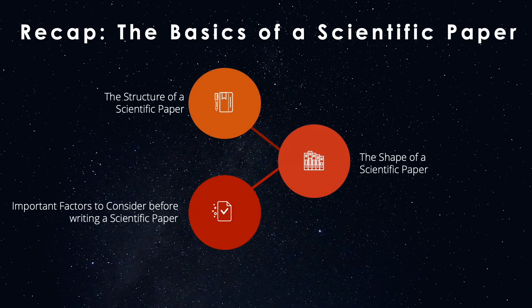To recap, in this video, we looked at the basics of a scientific paper. We saw that IMRAD is the basic organizational structure of a scientific paper, which is often modified to suit the journal. We then looked at the hourglass shape of a scientific paper, which starts off broadly looking at the knowledge gaps in the field, narrowing down to the specific experiment and results, and then broadening out again to show how the findings contribute to the field. Finally, we looked at six important factors to consider before starting to write your paper.